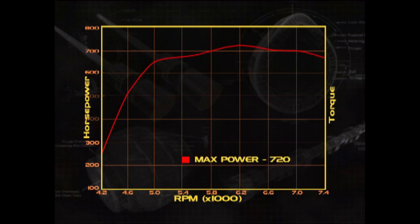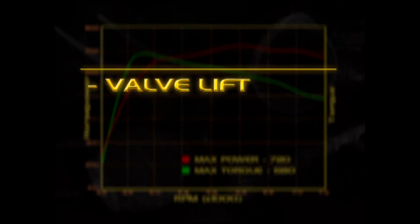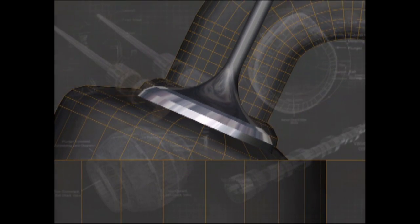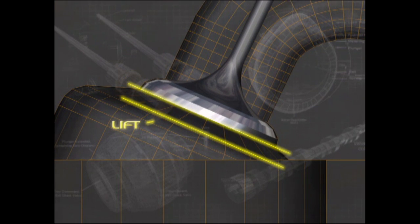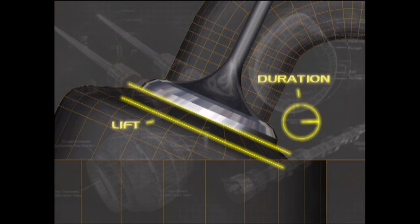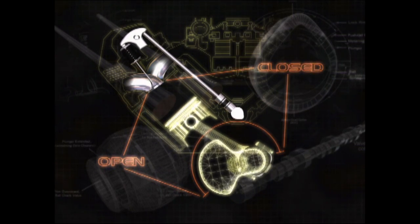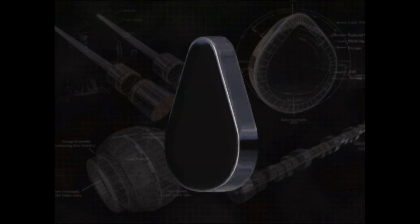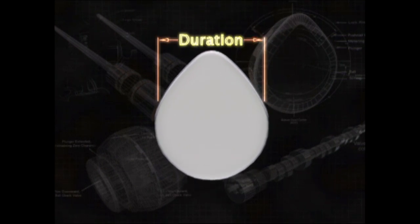For most of us, it comes down to selecting a cam that gives the right balance between street ability and high RPM horsepower. There are three main points to consider in terms of the power curve: valve lift, valve duration, and cam timing. Valve lift is how far the valve opens in relationship to the valve seat, measured in thousandths of an inch. Valve duration is how long the valve stays open, measured in degrees of crankshaft rotation. The greater the lift and duration, the greater the flow in and out of the combustion chamber. Cam timing determines when valves open and close in relationship to the piston, and it really comes down to the shape of the lobes and their relationship to each other.